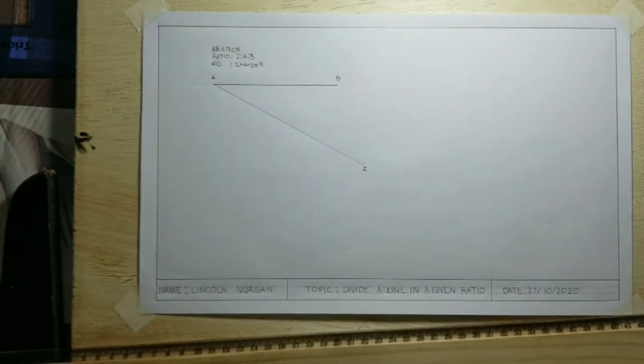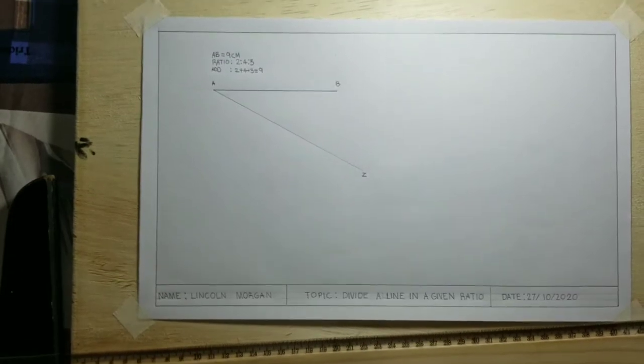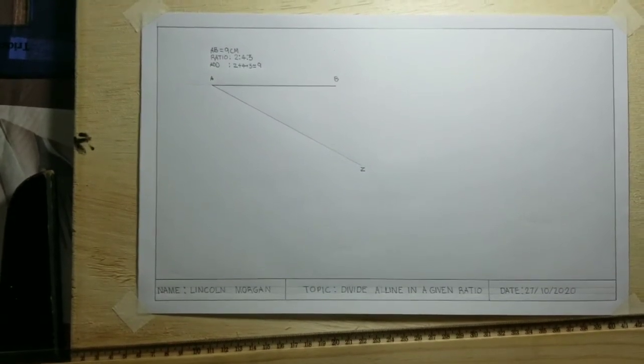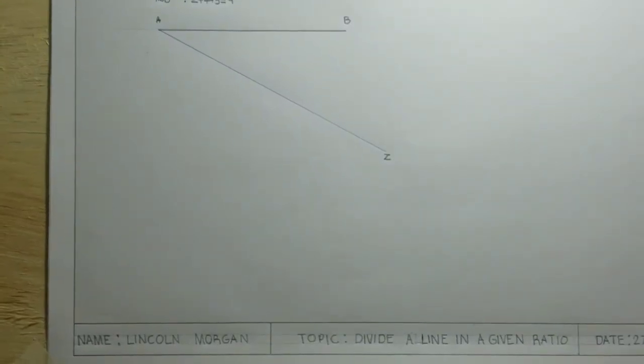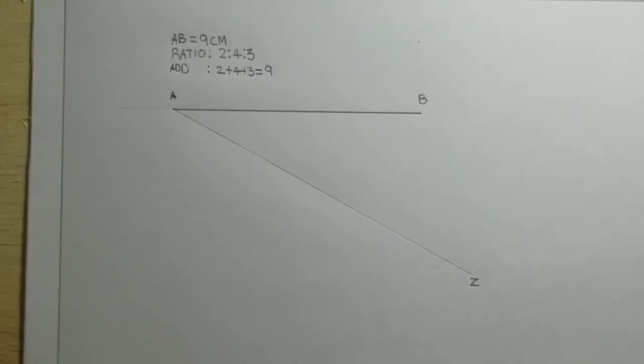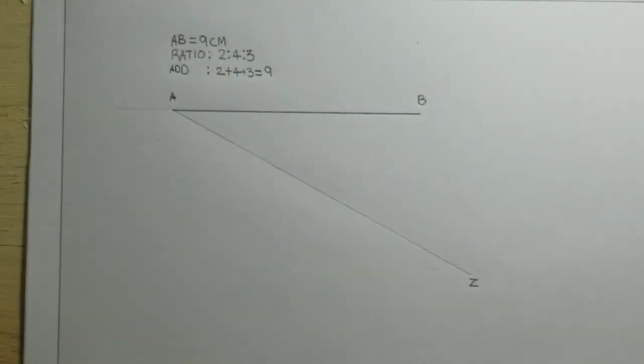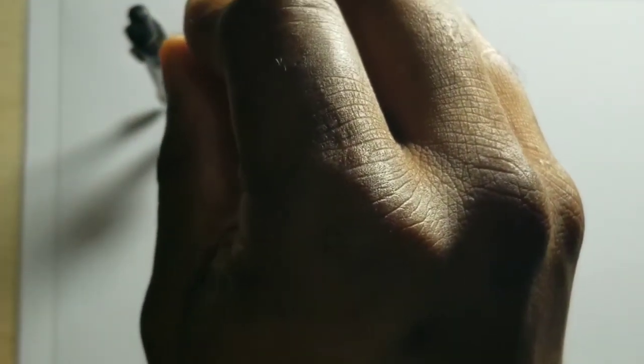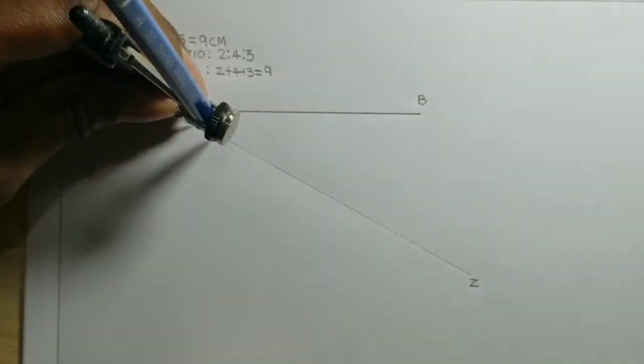So 2 plus 4 plus 3, we get 9. I'm going to be zooming in just a little. Now, once your compass was opened to a small, convenient radius, we will now be stepping off 9 divisions equally on this line AZ. Now, we will not move our compass once it is set.